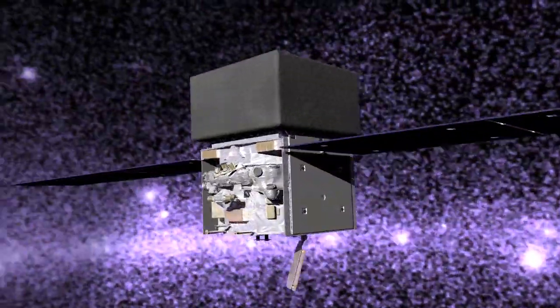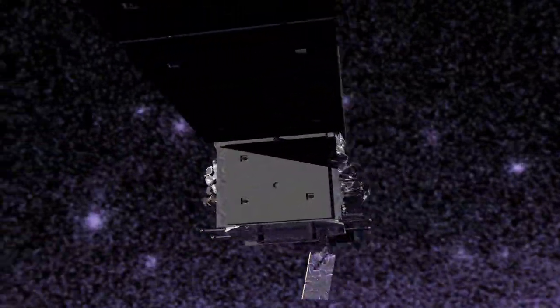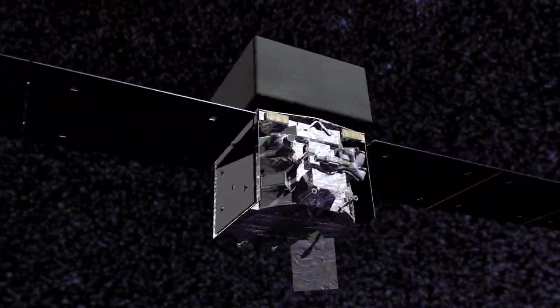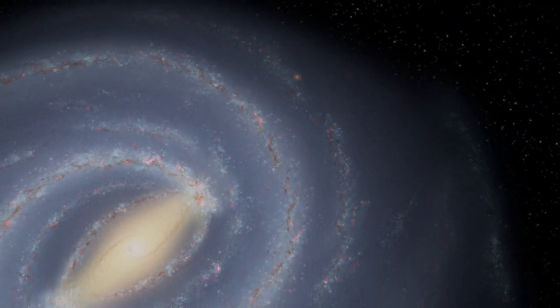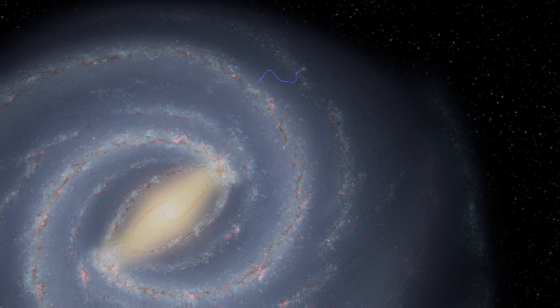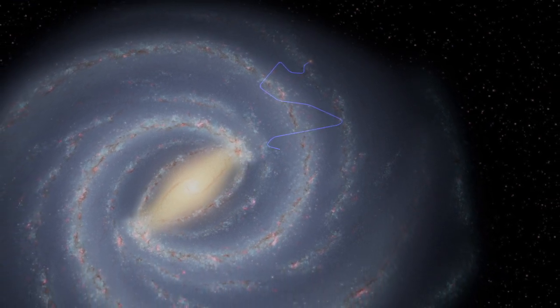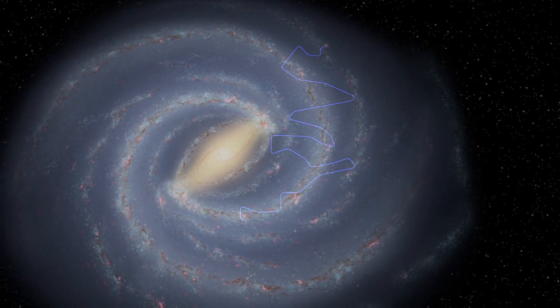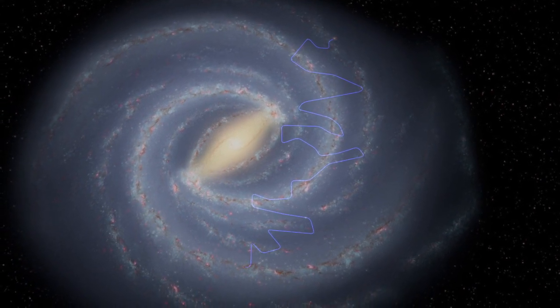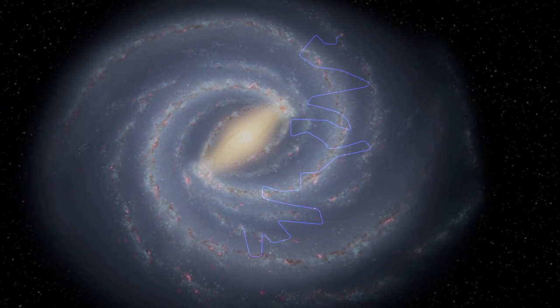Now, observations of two supernova remnants by NASA's Fermi Gamma-ray Space Telescope provide new insights. Because cosmic rays carry electric charge, their direction changes as they travel through magnetic fields. By the time the particles reach us, their paths are completely scrambled. We can't trace them back to their sources. So scientists must locate their origins by indirect means.